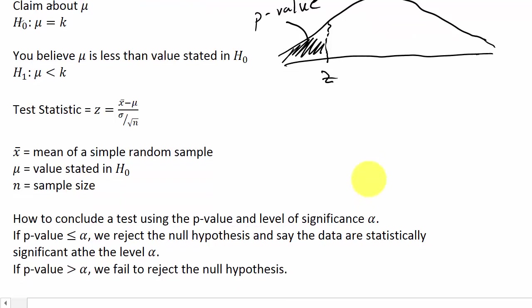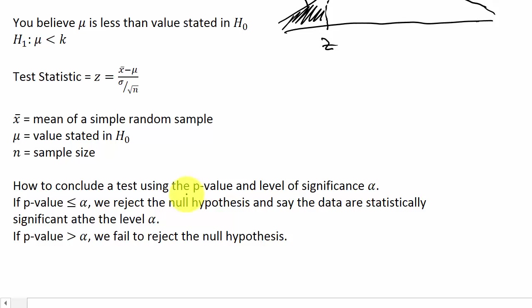How do we conclude a test using the p-value and the level of significance alpha? They'll give us a level of significance in the problem, usually it's 0.01, 0.05, or maybe 0.1. If our p-value is less than or equal to alpha, we reject the null hypothesis and say the data are statistically significant at the level alpha. If the p-value is greater than alpha, we fail to reject the null hypothesis.